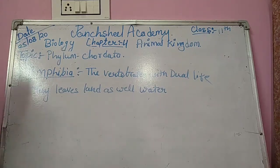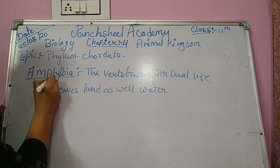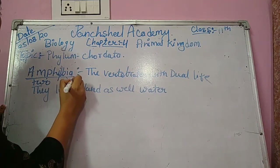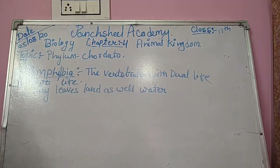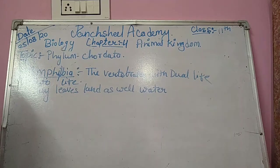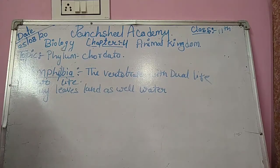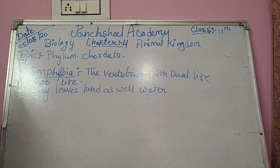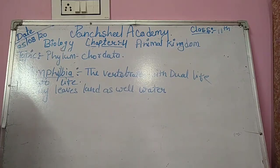Amphibians: 'amphi' means two, 'bios' means life — that means they have two life phases. The larval state, that is tadpole stage, lives in water, and the adult state is terrestrial, moving about with limbs and respiring with lungs and skin.